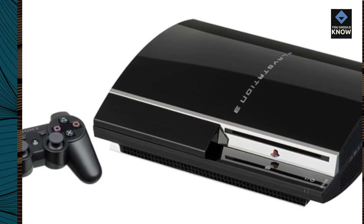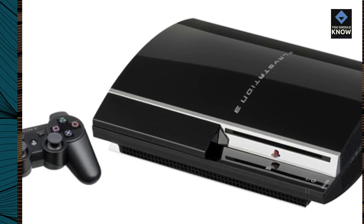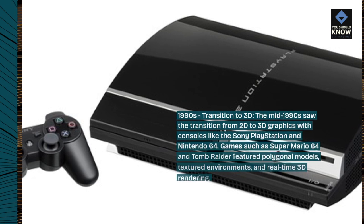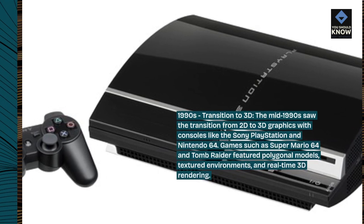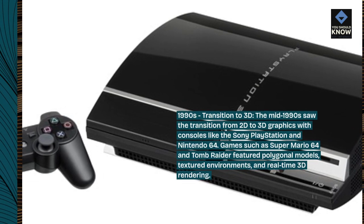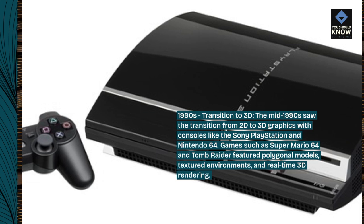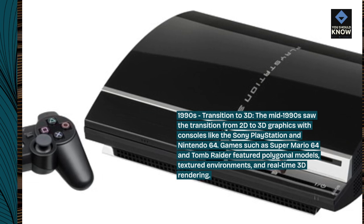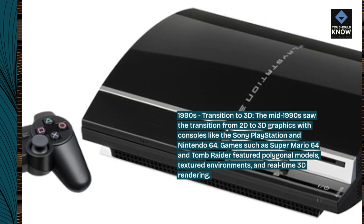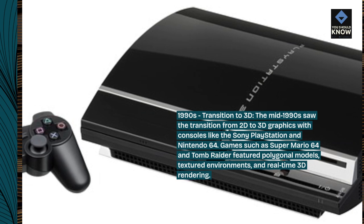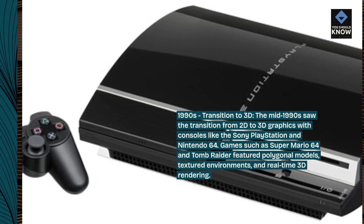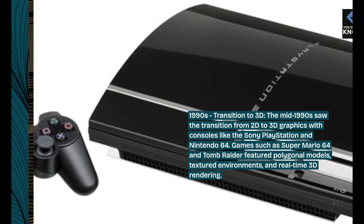1990s — Transition to 3D. The mid-1990s saw the transition from 2D to 3D graphics with consoles like the Sony PlayStation and Nintendo 64. Games such as Super Mario 64 and Tomb Raider featured polygonal models, textured environments, and real-time 3D rendering.